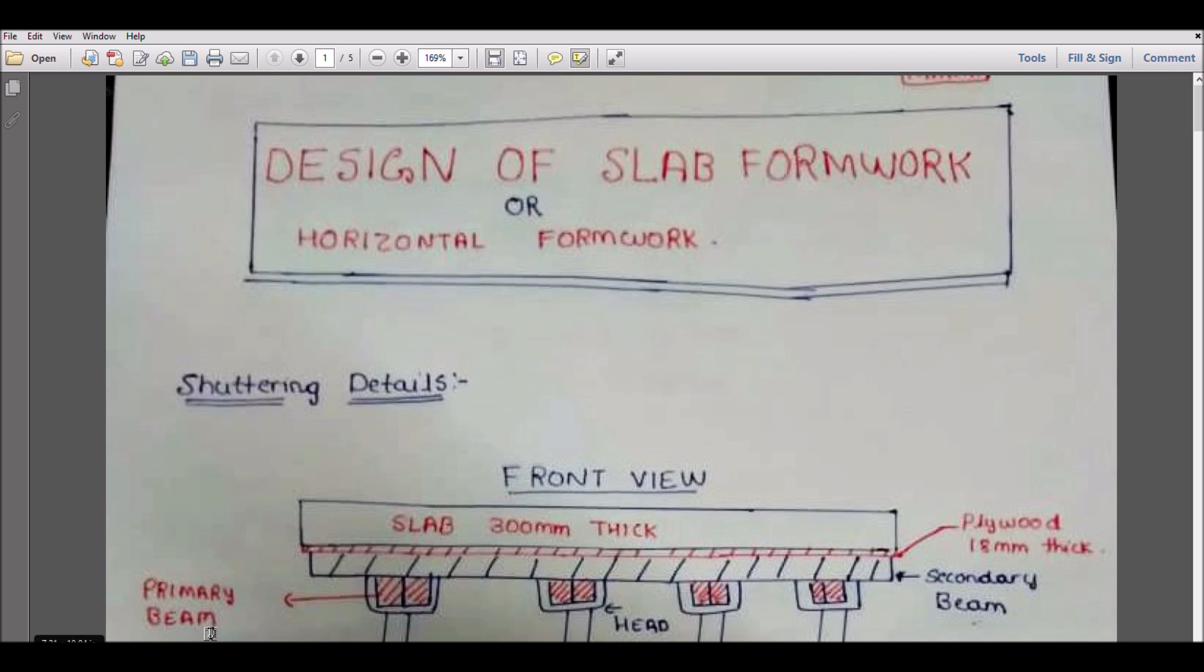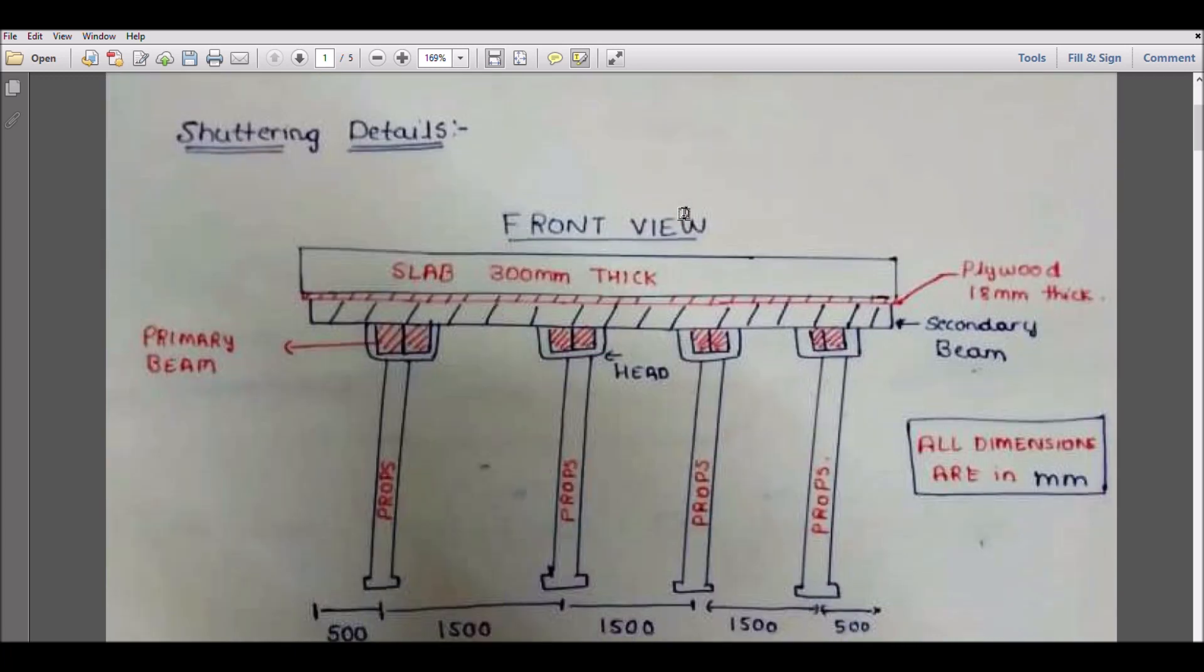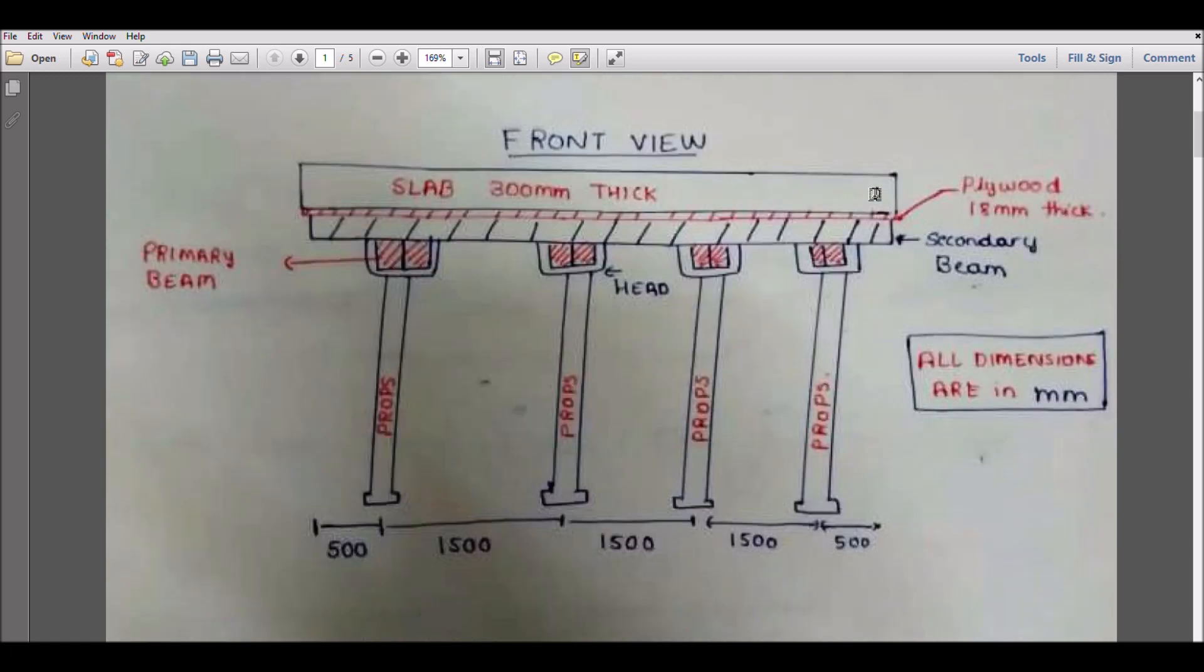Welcome to Civil Mania. Today we will discuss the design of slab formwork or horizontal formwork. First, I am considering a 300mm thick slab. As you see in this front view, this is our 300mm thick slab, then the 18mm plywood I am using, secondary beam.